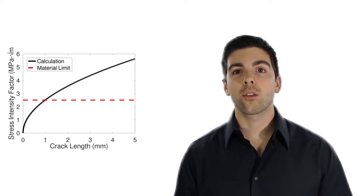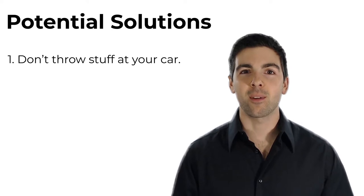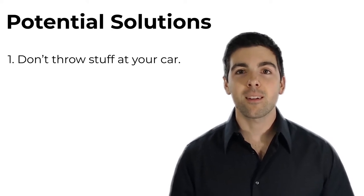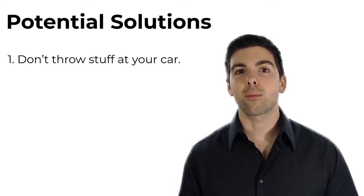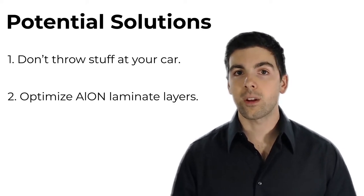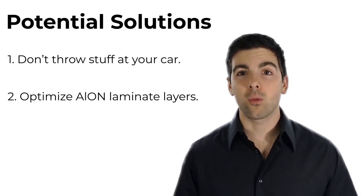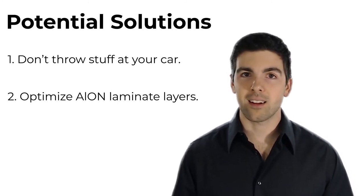So what are the solutions to this problem? Well, the easiest one is to not throw big metal balls at your car windows. But if folks insist on being able to do so, Tesla could look into playing around with the thickness of their ALON layers versus polymer layers in their windows. They can't really increase the total thickness of the window without really rebuilding the entire door, so that's not a great idea.